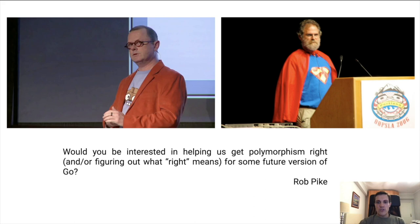Rob Pike, you can see on the left, asked Phil Wadler, who you can see on the right, if he'd be interested in helping find the right form of polymorphism for Go. By this time, all the academics and the team that later resulted in this paper got together with Robert Griezmer and Ian Taylor, who were members of the Go team.